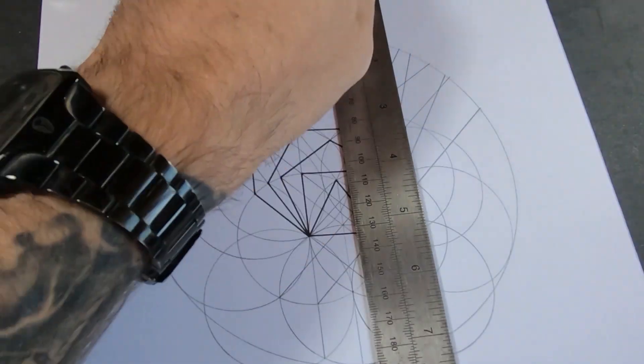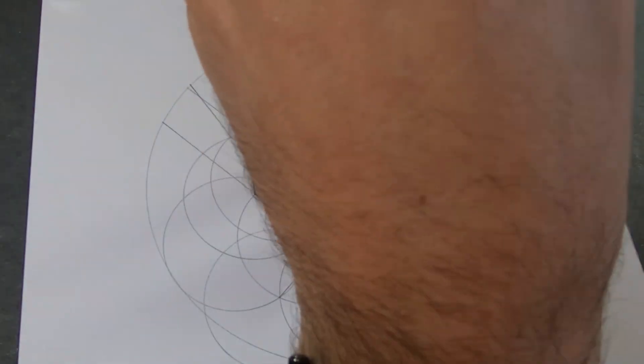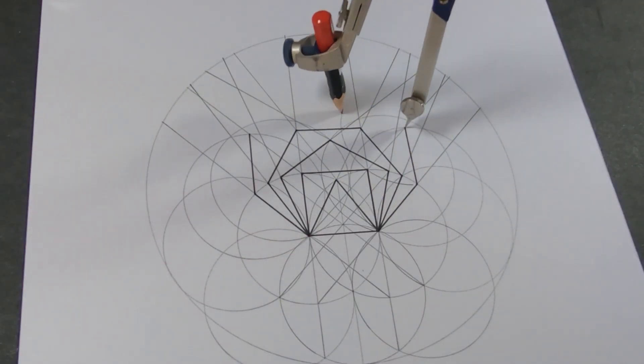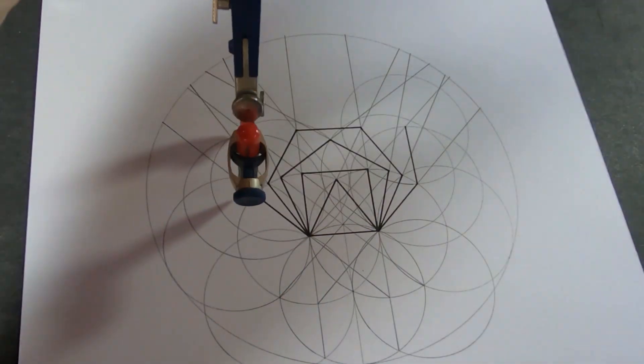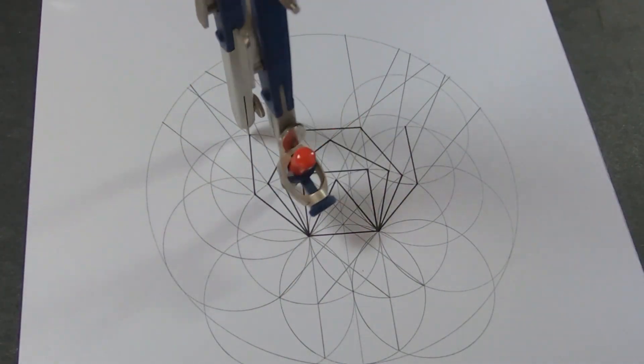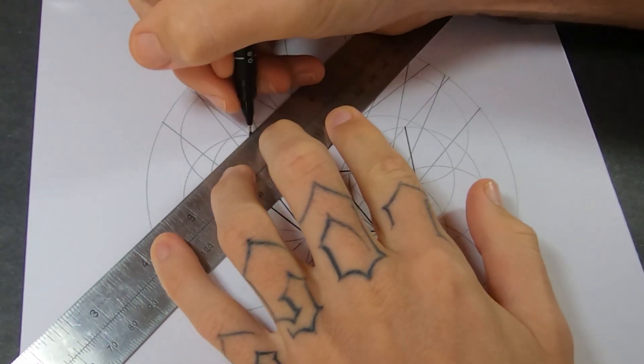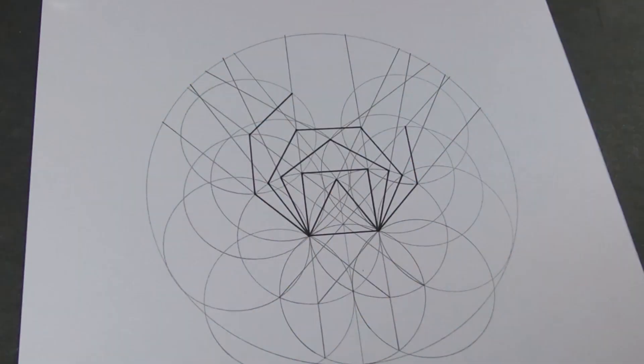Now, there's part of the octagon. I need to use the compass again to find the top of the shape. And there it is.